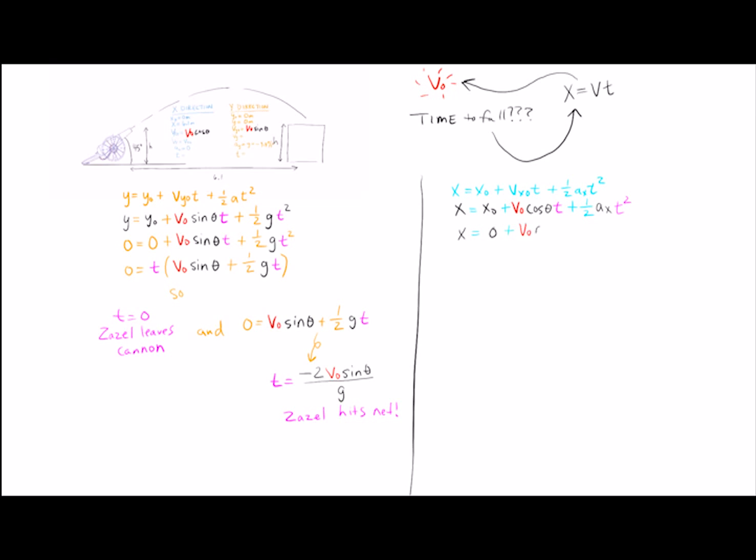As before, black indicates known quantities, red and purple are the two we're looking for. At this point, we combine the equations, substituting in our expression for time into the x-equation. Now that we have one equation and one unknown, all we need to do is simplify and solve for the initial velocity.